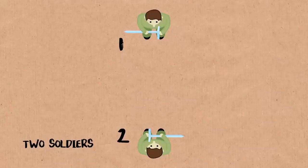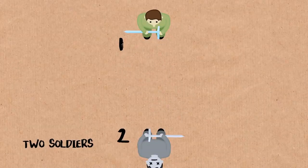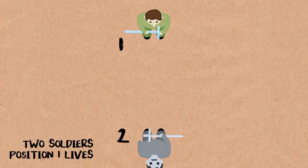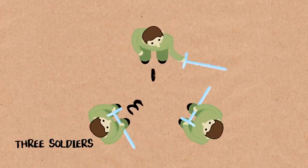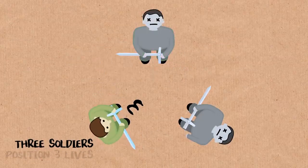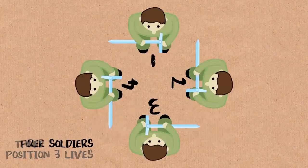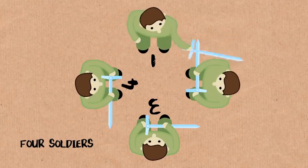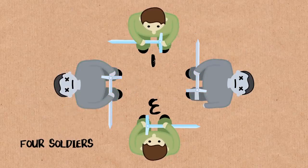But before I really try to phrase those, I'd like to fill in the table a little bit more. So if there's only one person, well, that person's the winner, so that one is easy. There's two people, one kills two, one's the winner. If there's three people, one kills two, three kills one, three's the winner. If there's four people, one kills two, three kills four, one kills three.